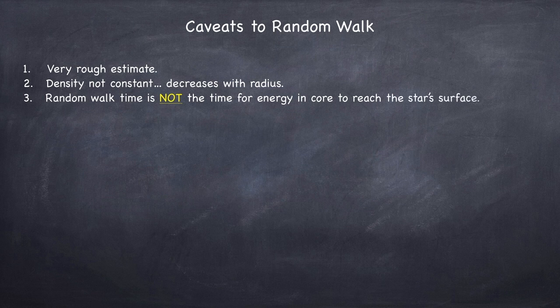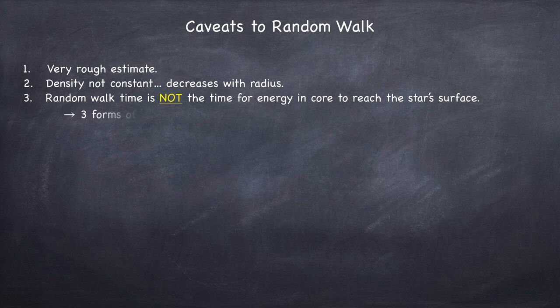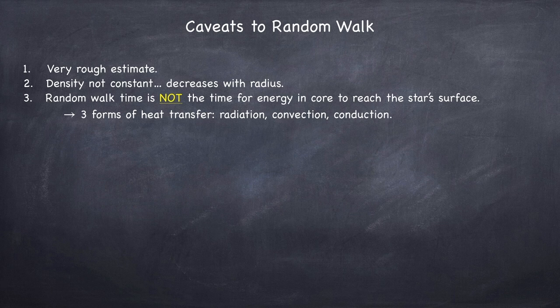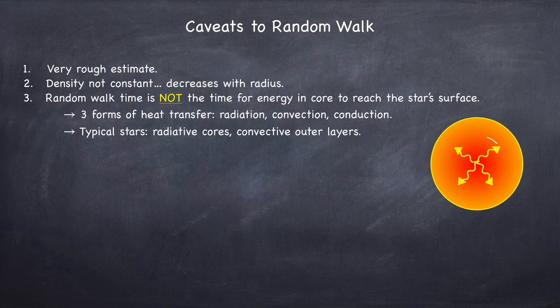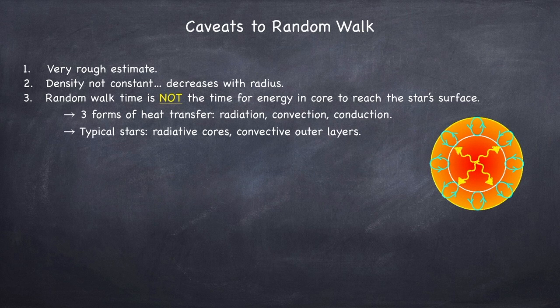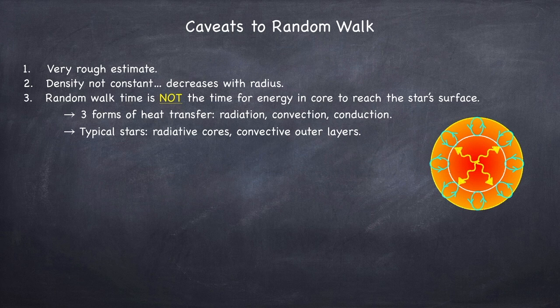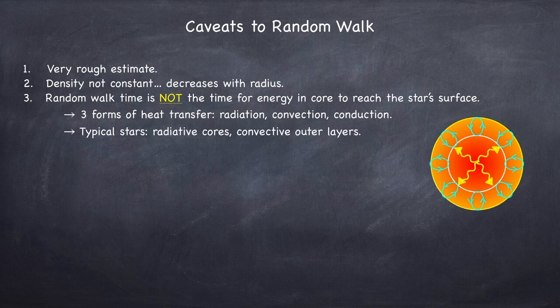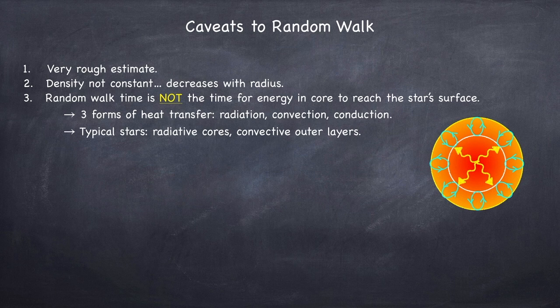Third, and this is very important, the random walk time is not the time it takes for energy released in the stellar core to reach the star's surface. There are three forms of energy transport: radiation, convection, and conduction. This analysis would work for radiation only. Typically, stars have radiative cores and convective outer layers. So this would hold only for the inner part of the star. After that, once you get to the convective layers, heat is transferred more efficiently through convection. As a general rule, the more massive the star is, the larger the convective zones. To the point that if a star is very massive, it becomes entirely convective. Somewhat ironically, these stars are also referred to as radiation dominated stars. But that's because they're supported by radiation pressure. We'll see more about that in the future as well.